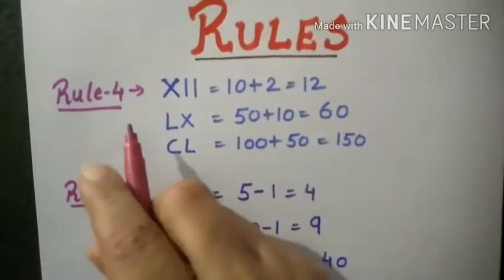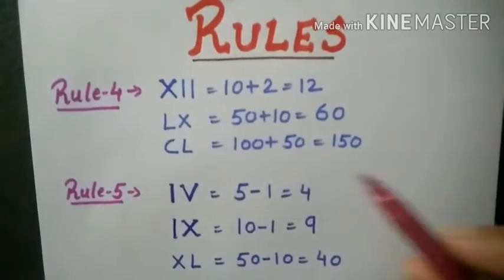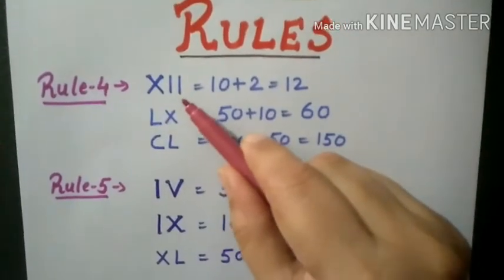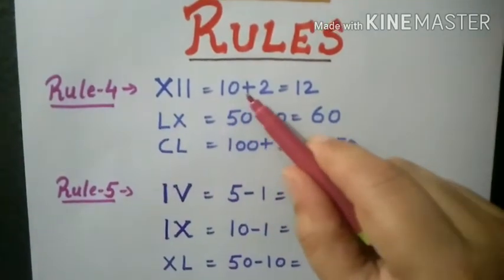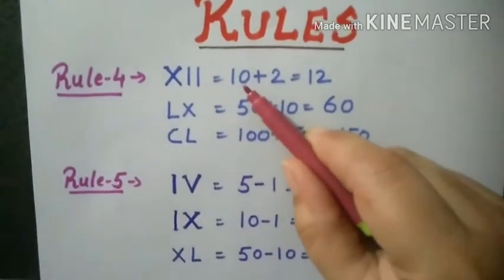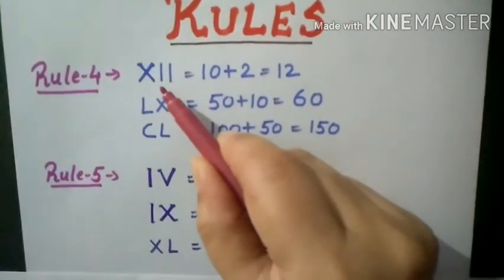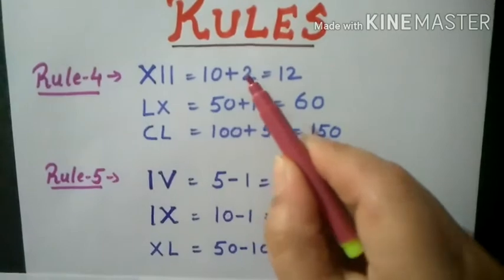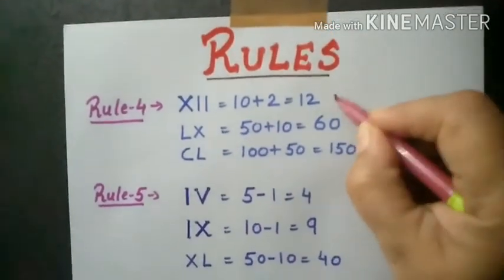For rule 4, if the symbol with the smaller value is written to the right side of the greater value, it means that we are adding the smaller value to the greater value. See from the example, X is 10 and two I means 2. This smaller value is written on right side and will be added and we get 12.